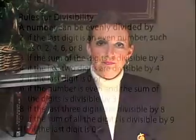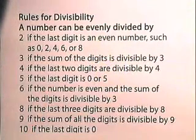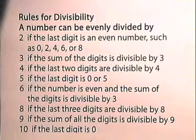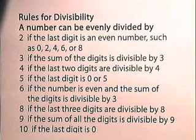Now let's look at the rules for divisibility. A number can be evenly divided by two if the last digit is an even number, such as zero, two, four, six, or eight. By three if the sum of the digits is divisible by three.